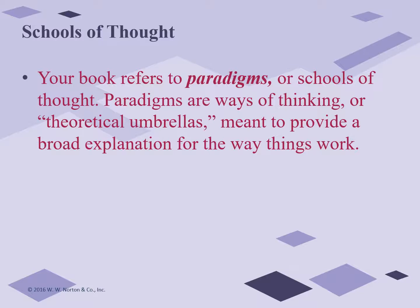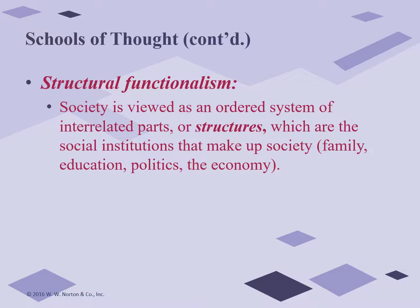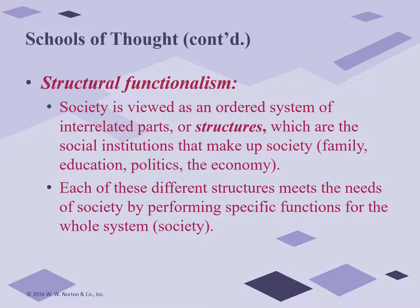Your book refers to paradigms or schools of thought as theoretical umbrellas, and those terms are used interchangeably. The first school of thought is structural functionalism, and the key word is function — according to this theory, everything in our society has a function. The main principles are that society is a stable, ordered system of interrelated parts or structures, and each structure has a function that contributes to the continued stability or equilibrium of the whole.